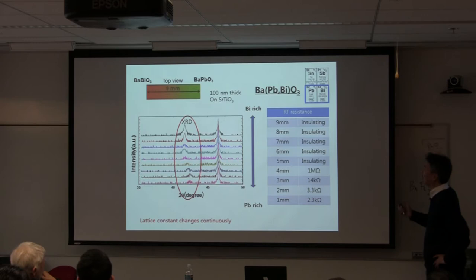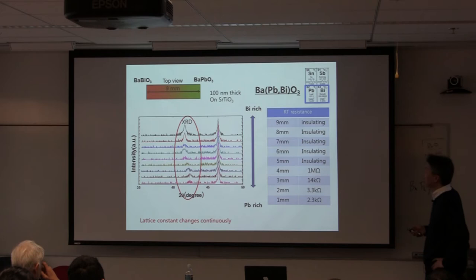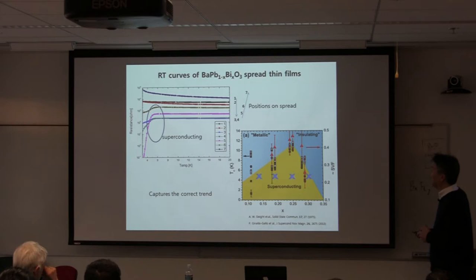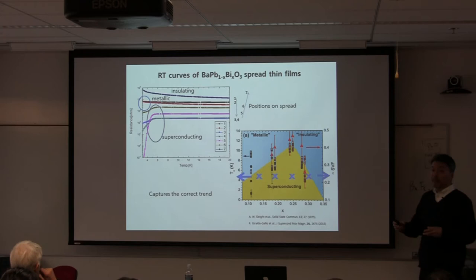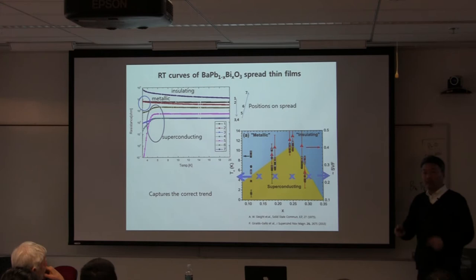One example: we took barium bismuthate and barium lead oxide, and from X-ray measurements at each point you can see the lattice constant changing continuously. We identified superconducting, metallic, and insulating regions. On one chip, you can map the entire superconducting phase diagram. We also do co-sputtering for composition spreads — tilting gun heads deliberately to make composition variation rather than uniformity. Electron probe maps composition: high aluminum here, high manganese there, nickel in another region, with the one-to-one-to-one Heusler composition somewhere in the middle.